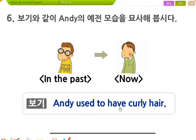예전에는 곱슬머리를 하고 있었다. 예전에는 안경을 쓰고 있었다. Andy used to wear glasses. 향수, 구두, 양말, 신발, 바지, 모자 다 wear라고 그랬지. Andy used to wear glasses.